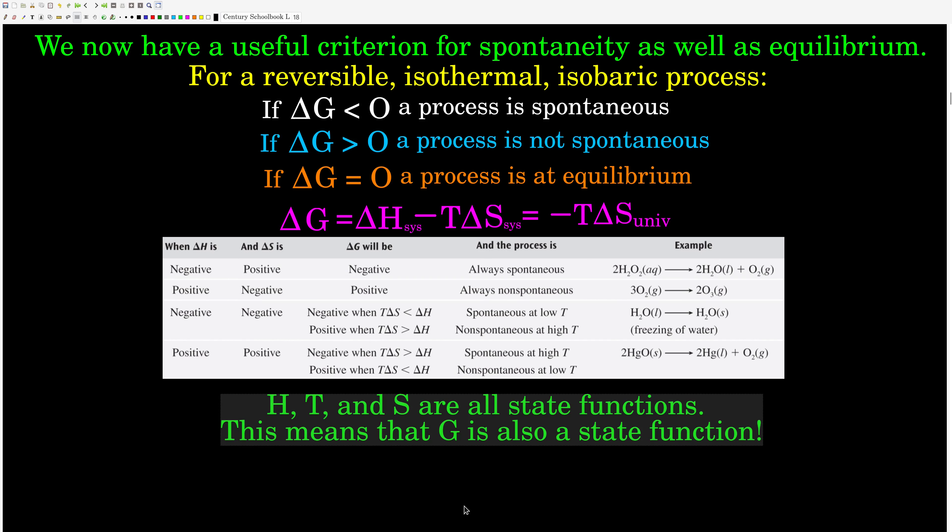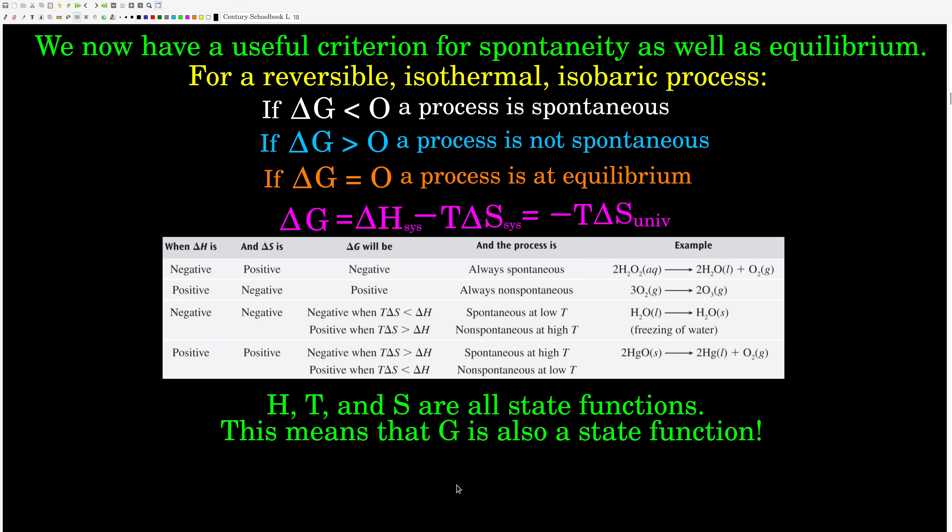This is an important fact: we already know that enthalpy, temperature, and entropy are all state functions — they do not depend upon how they got where they are, just where they are at the time. That means delta H and delta S depend only upon the initial and final states and not the path taken. Because G is comprised of H, T, and S — Gibbs free energy equals H minus TS — Gibbs free energy is also a state function. Delta G depends only upon the initial and final states, and that means we can do all kinds of useful things with it.